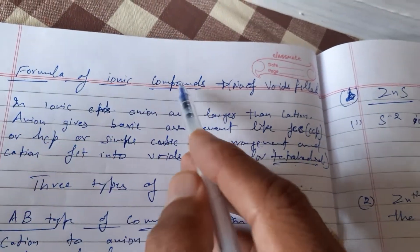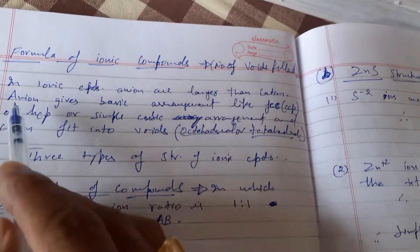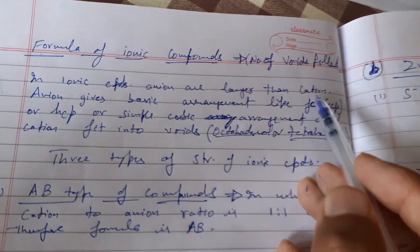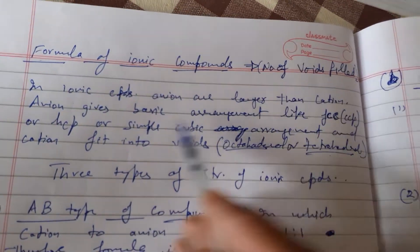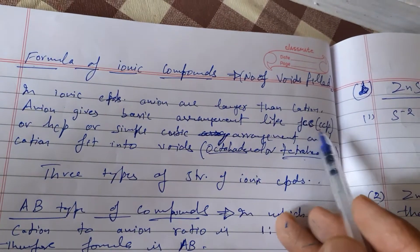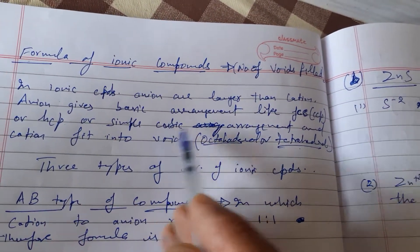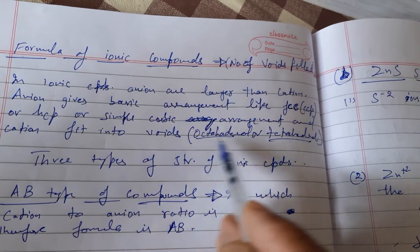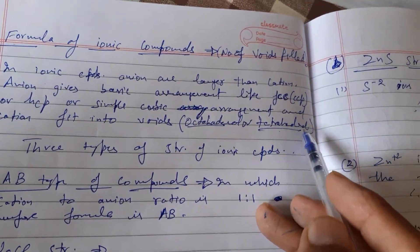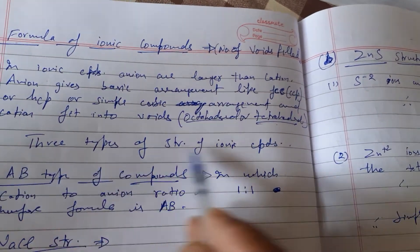We are going to discuss the formula of ionic compounds and the number of voids filled. In ionic compounds, anions are larger than cations. Anions give the basic arrangement like CCP or HCP type of unit cell, whereas cations always fit into the voids — either tetrahedral or octahedral voids.